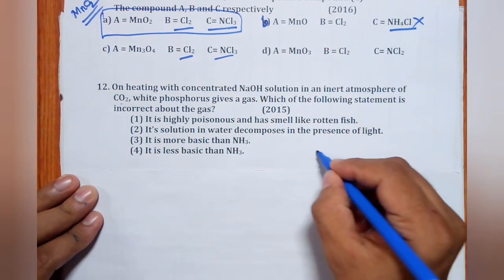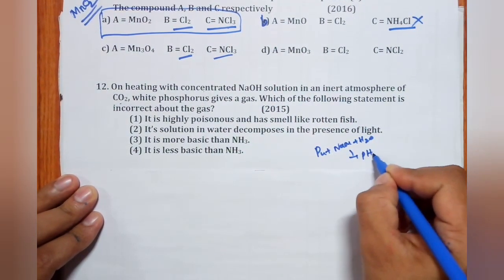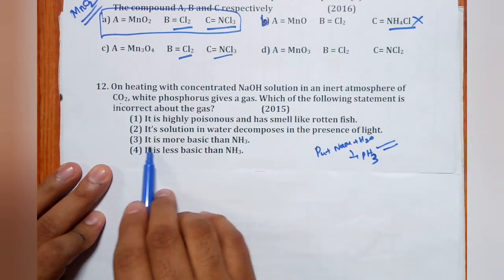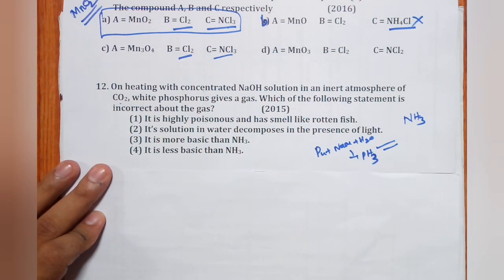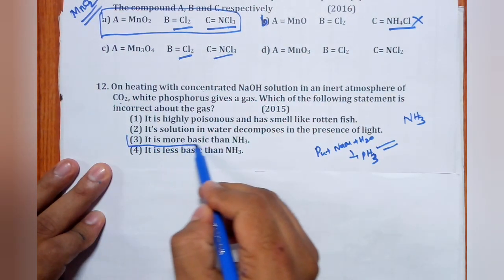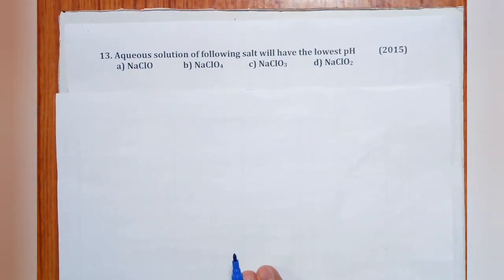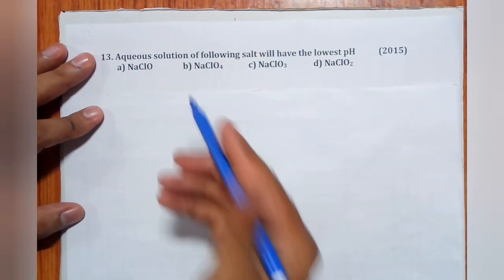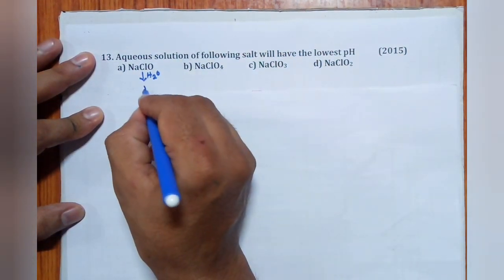Question 12 (2015): On heating with concentrated NaOH in an inert atmosphere of CO2, white phosphorus gives a gas. The gas is PH3 (phosphine). Which statement is incorrect about PH3? Highly poisonous — correct. Its aqueous solution decomposes — correct. More basic than NH3 — WRONG (NH3 is more basic than PH3). Answer is (c).